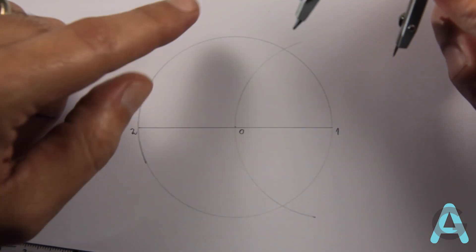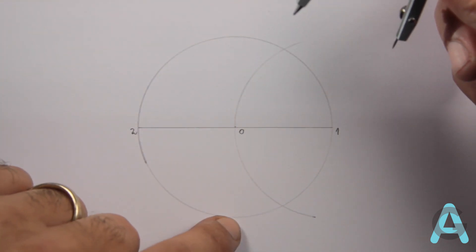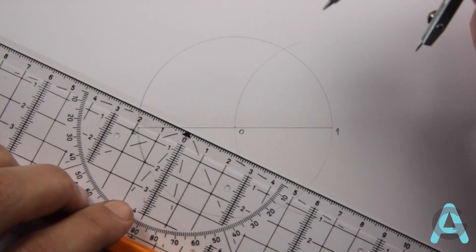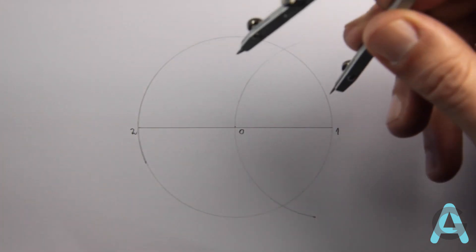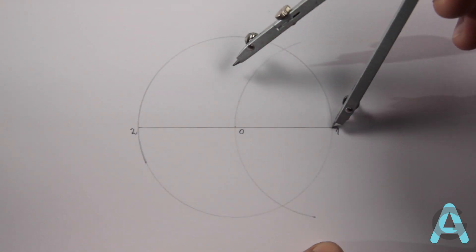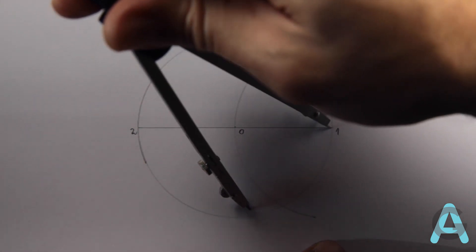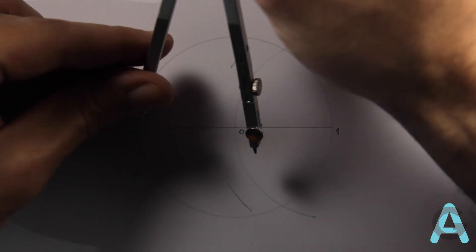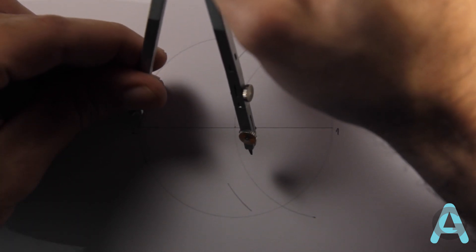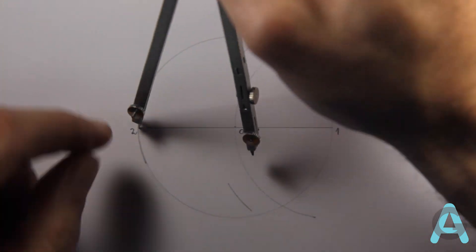Afterwards, let's do a diameter which is perpendicular to the first diameter. For that, let's bisect the segment 2-1. We'll open the compass more than half the length of 2-1, put the needle in 1, and do two small arcs above and below the diameter.